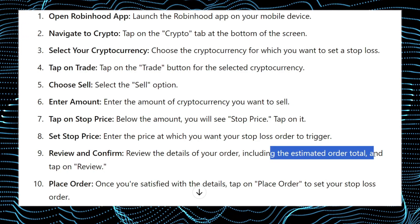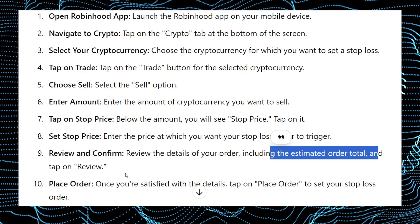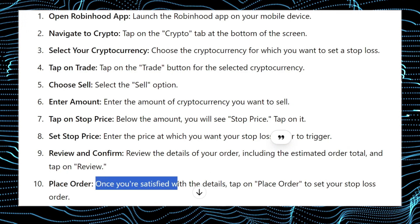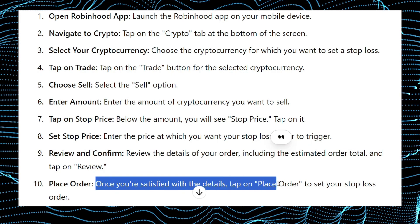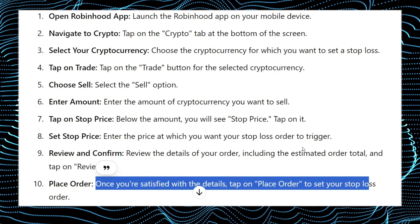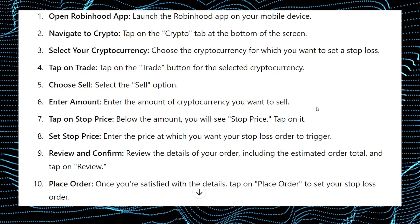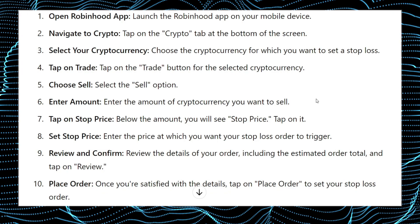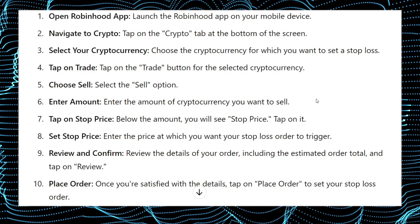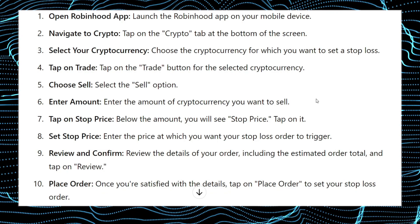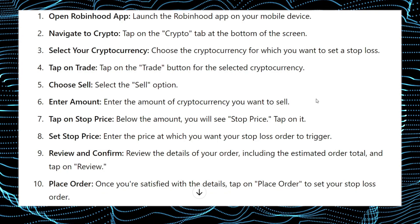Review the details of your order including the estimated order total and tap on review. Once you're satisfied with the details, tap on place order to set up your stop loss order. That's it — that's how you'll be able to set up a stop loss order on Robinhood Crypto. Hope you guys find this video helpful.